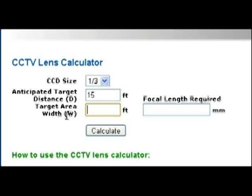Target area width. This is also known as the field of view or the horizontal field of view. This is basically the number of feet that you want covered in the width of the scene. So at a distance of 15 feet, let's say we want to cover an area that is 18 feet wide. So we type 18 here, and then we click calculate.